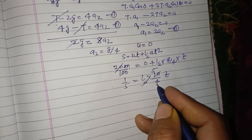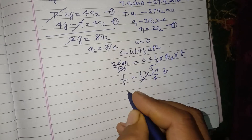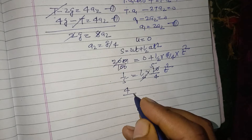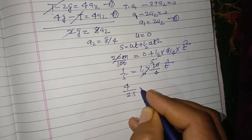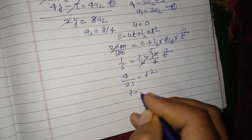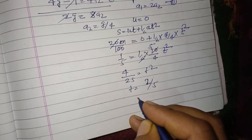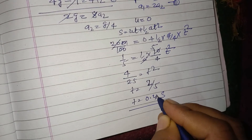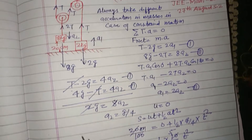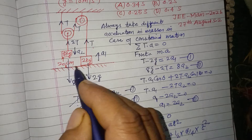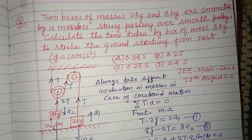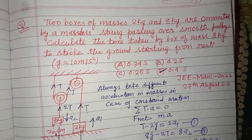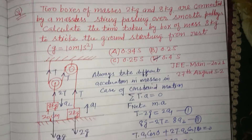Simplifying: 1/5 = (1/2) × (10/4) × t², which gives t² = 4/25, so t = 2/5 = 0.4 seconds. The time taken for the 8 kg block to reach the ground is 0.4 seconds, so the answer to this question is option (d). I hope you got it — please like the video, subscribe to the channel, thanks for watching.